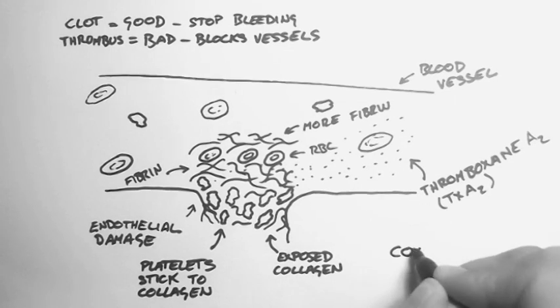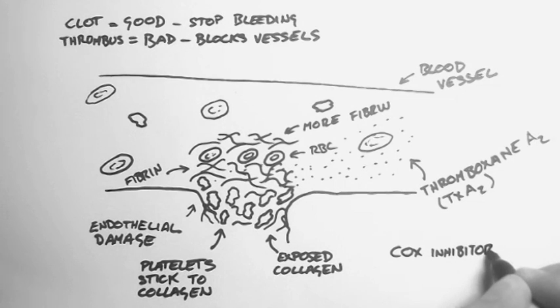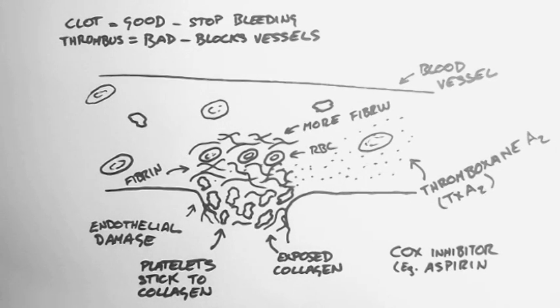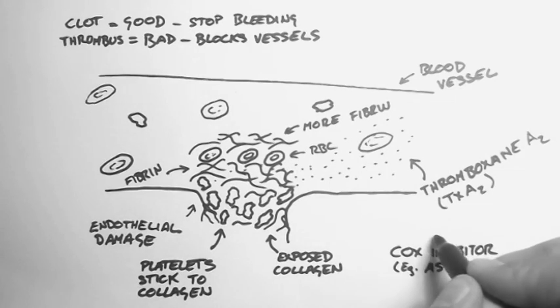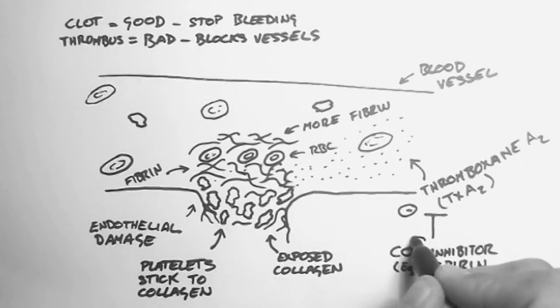Now this whole process can be avoided if you stop the thromboxane production by platelets. And this is done with a COX inhibitor, or a cyclooxygenase inhibitor. Again, have a look at the arachidonic acid and eicosanoids tutorial on handwritten tutorials.com for more information. An example of a COX inhibitor is aspirin.